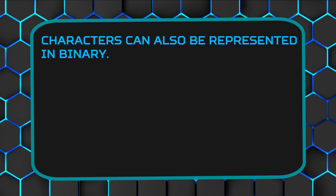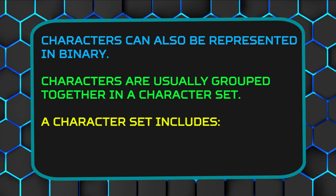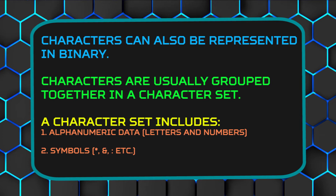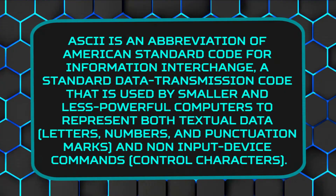Let's jump ahead to characters. Characters can also be represented in binary. Characters are usually grouped together in a character set. A character set includes: number 1, alphanumeric data, which is letters and numbers; number 2, symbols; and number 3, control characters such as shift, escape, etc. The ASCII uses 8 bits to represent a character. For those who don't know, ASCII is an abbreviation for the American Standard Code for Information Interchange — a standard data transmission code used by computers to represent both textual data and non-input device commands, such as control characters.